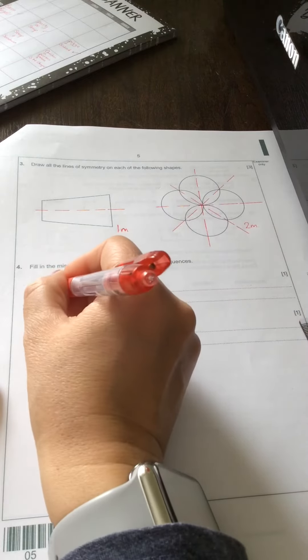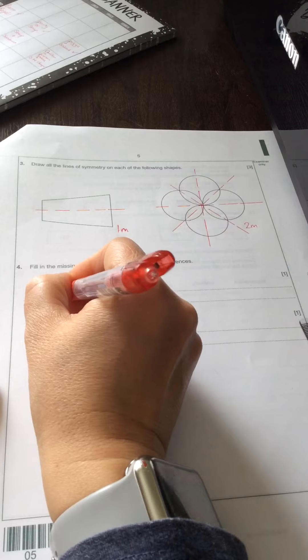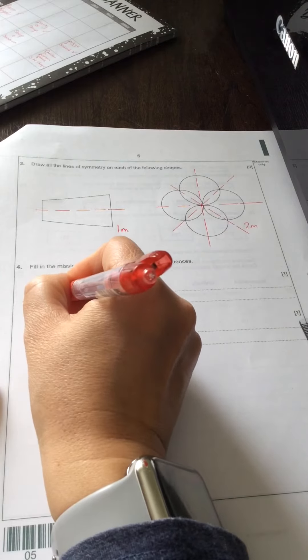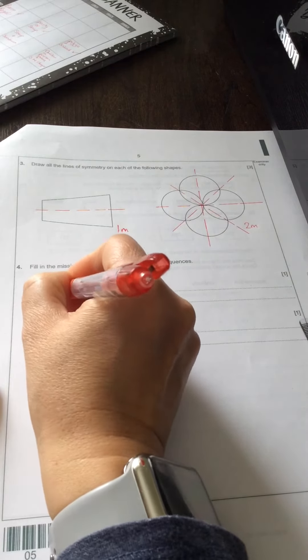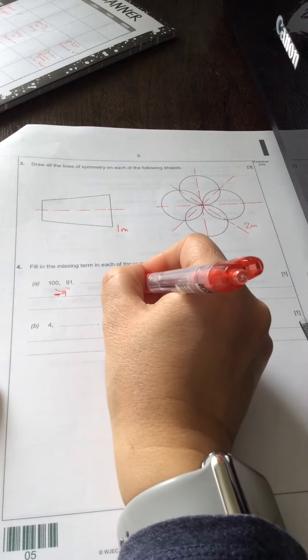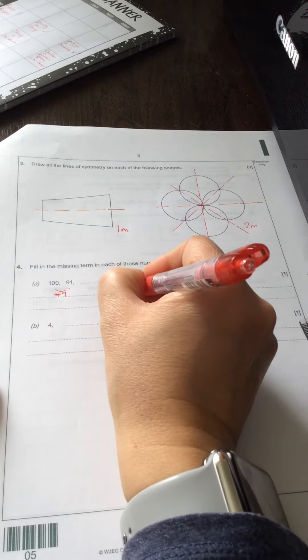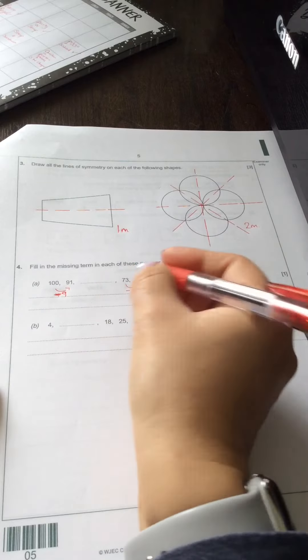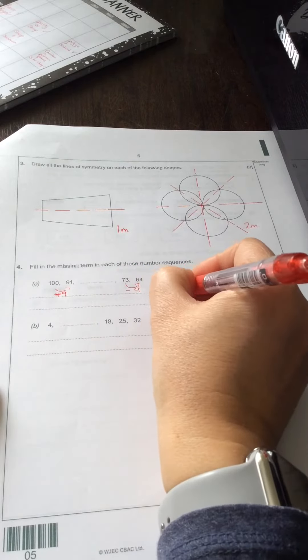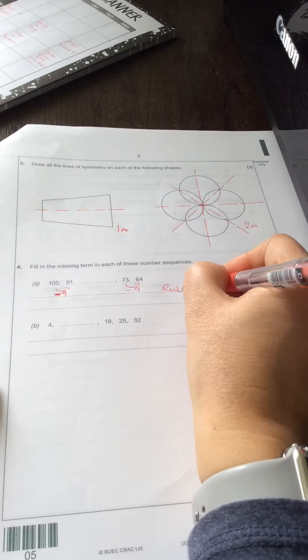So we can see that if it goes from 100 to 91, that would be take away 9. Let's just check that's the rule. 73 to 64 again would be take away 9. So the rule we're going to be following is take away 9.